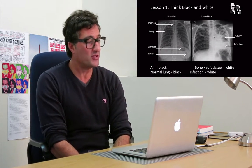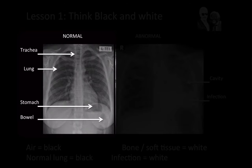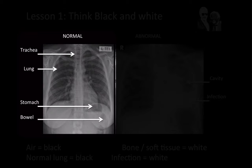I've put on the left a normal chest x-ray — this is an adult — and you can see the areas I've pointed out: the trachea, which contains air, the lung, the stomach and bowel below the diaphragm, all contain air and are therefore black. So keep in mind that a normal healthy lung should be full of air and should be black, because the x-ray is usually taken with the patient having inspired.